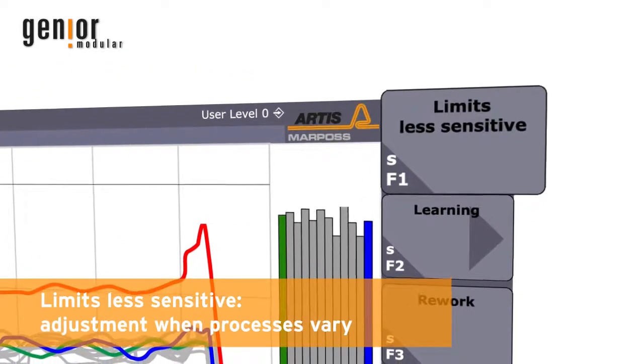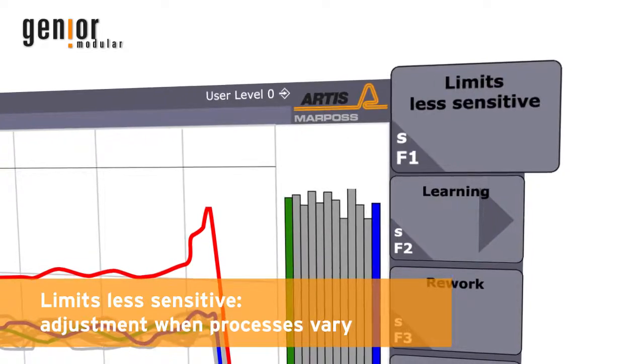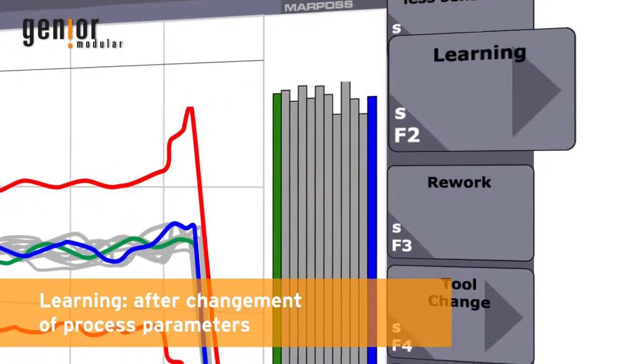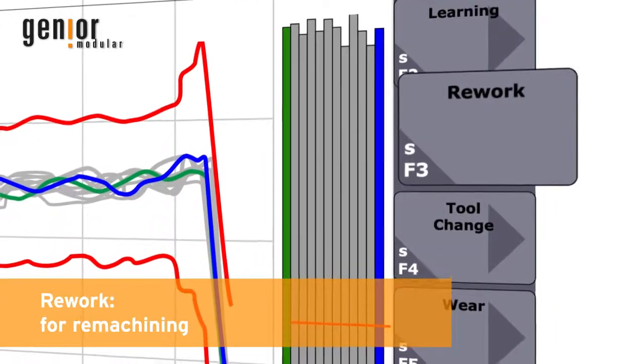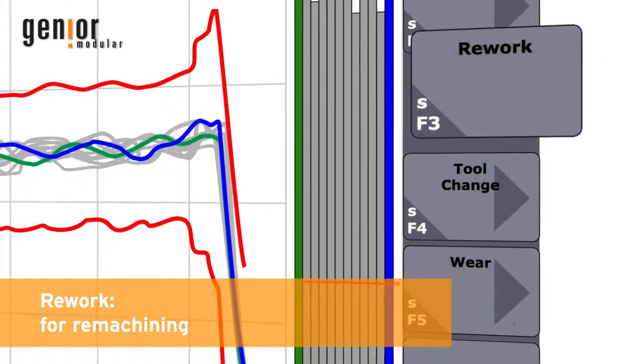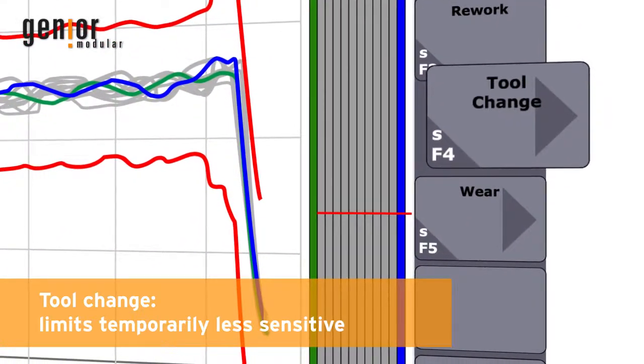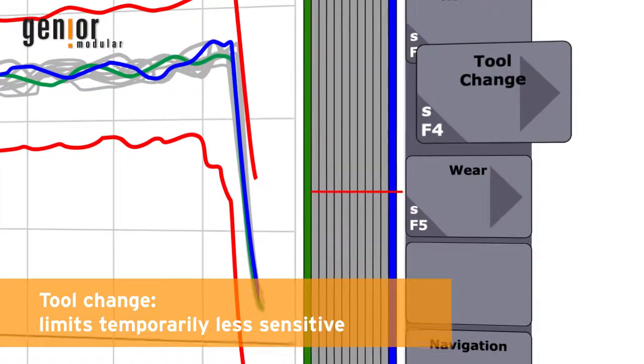Is used to compensate process deviations. New learning cuts after a change of parameters. Deactivates the alarm limits for a single work piece. Sets the limits temporarily less sensitive.